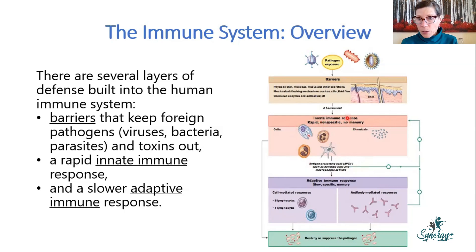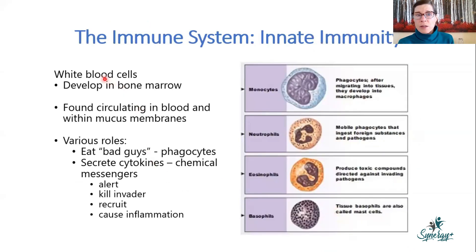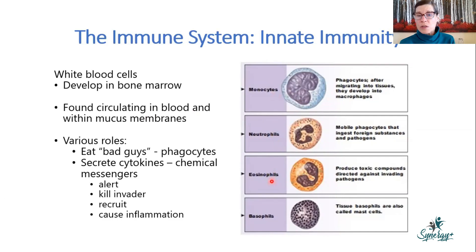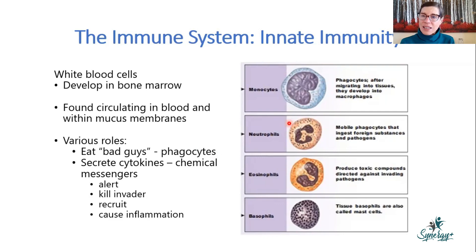The innate immune response involves white blood cells that develop and release from bone marrow, circulate in the blood, and migrate into lymphoid tissue and mucous membranes. There are different types: monocytes, neutrophils, eosinophils, and basophils — they look different and stain differently under a microscope. Monocytes and neutrophils are phagocytes — their job is to phagocytize (eat) anything foreign: parasites, bacteria, viruses, toxins. They digest and get rid of them.